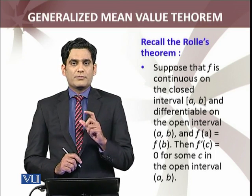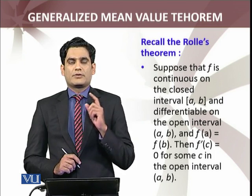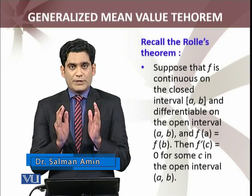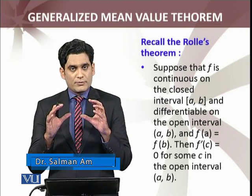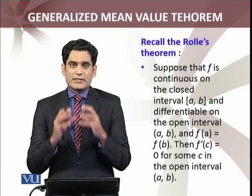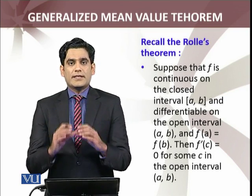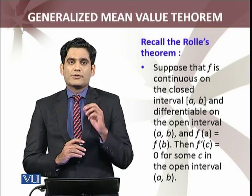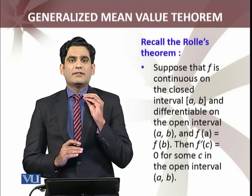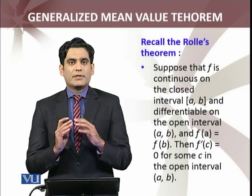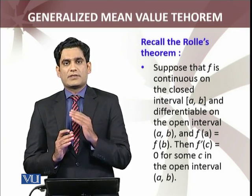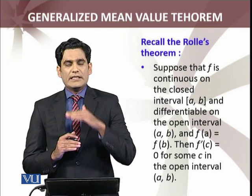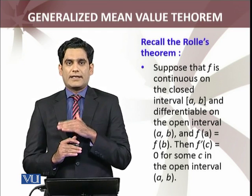Before I go for the proof, let me recall Rolle's theorem. Rolle's theorem states that if f is continuous on the closed interval and differentiable on the open interval, and furthermore f(a) equals f(b), then there must be a point c in the interval (a, b) such that f'(c) equals 0. Graphically, the tangent line at c is parallel to the x-axis.